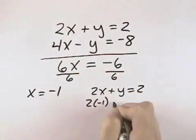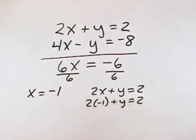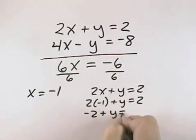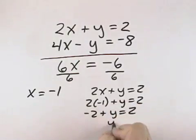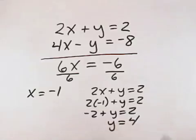Substitute our x value in to get 2 times negative 1, which is negative 2, plus y equals 2. And adding 2 to both sides, I get y equals 4.